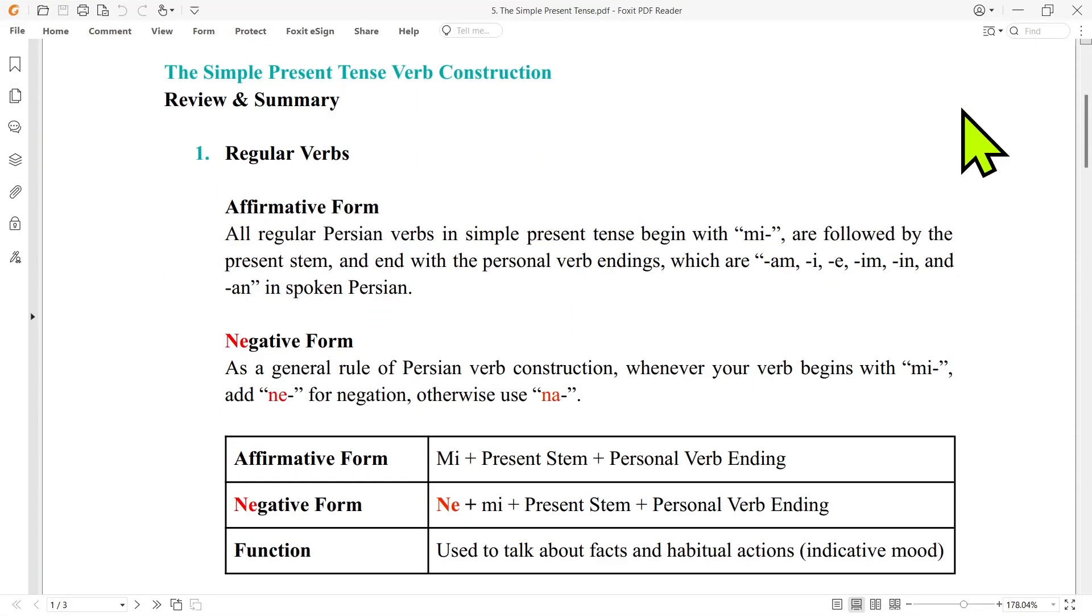Let's begin with the regular verbs. In the affirmative form, our regular Persian verbs in the simple present tense begin with mi, are followed by the present stem, and end with the personal verb endings: am, i, e, im, in, and an in spoken Persian.